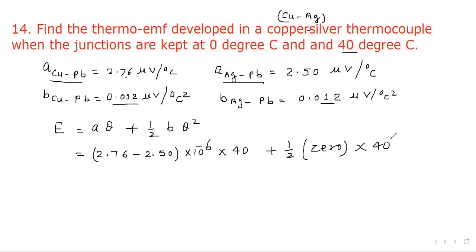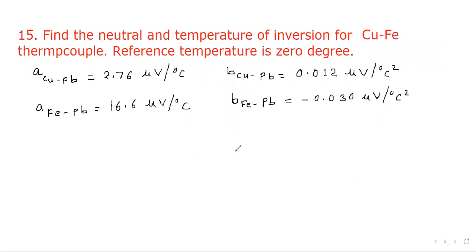Squaring the temperature term and simplifying, the B term cancels to zero. So we get 1.04 into 10 to the power minus 5. Now consider question number 15: find the neutral temperature and temperature of inversion for a carbon-iron thermocouple, with a reference temperature of 0 degrees centigrade.